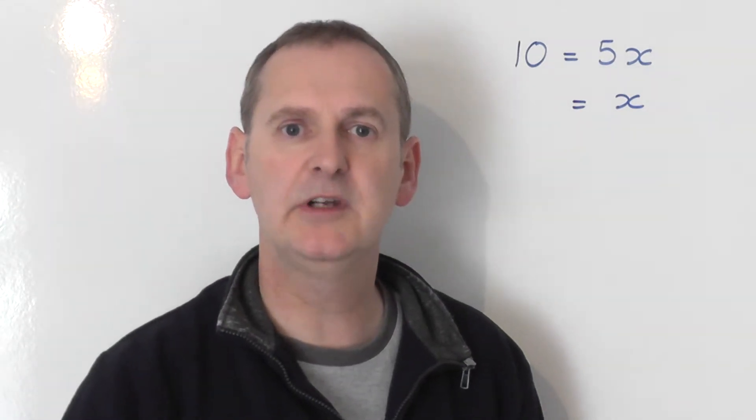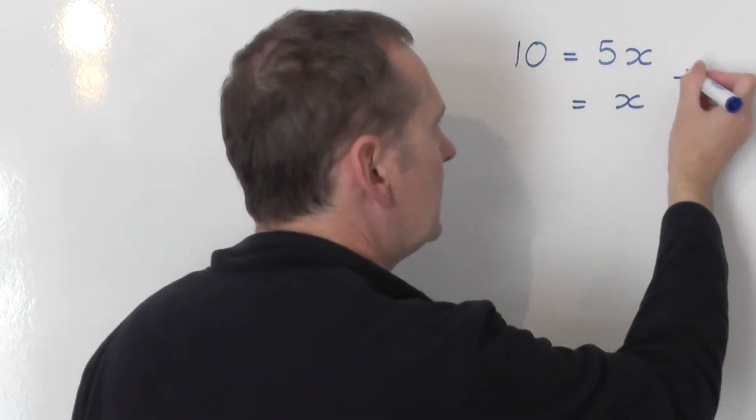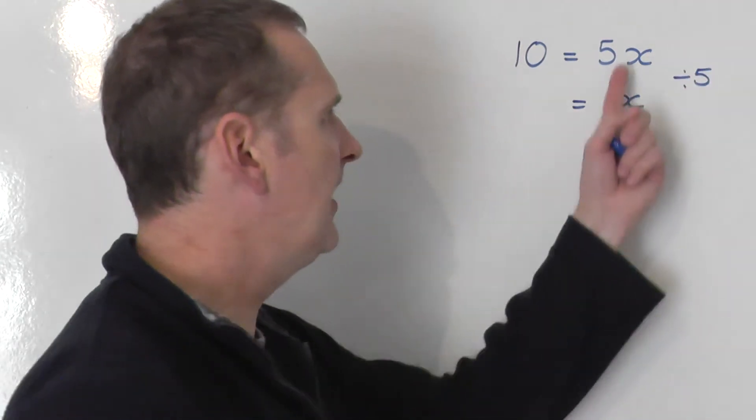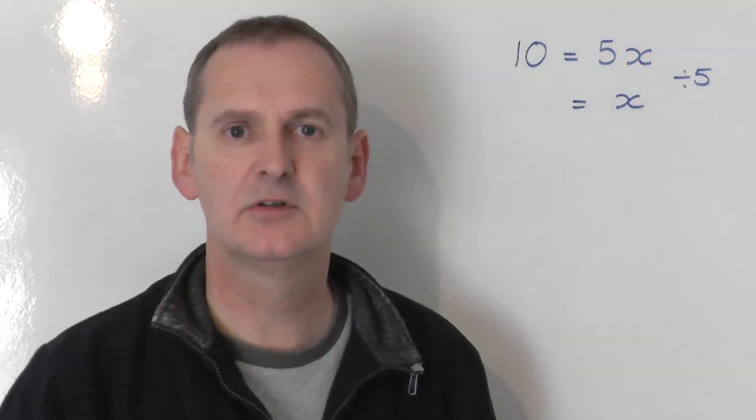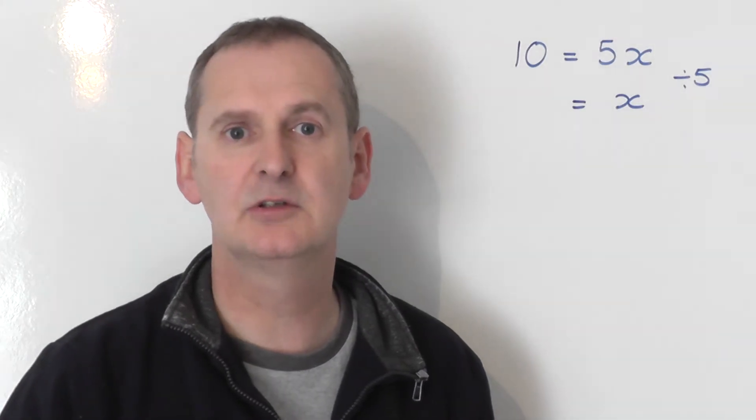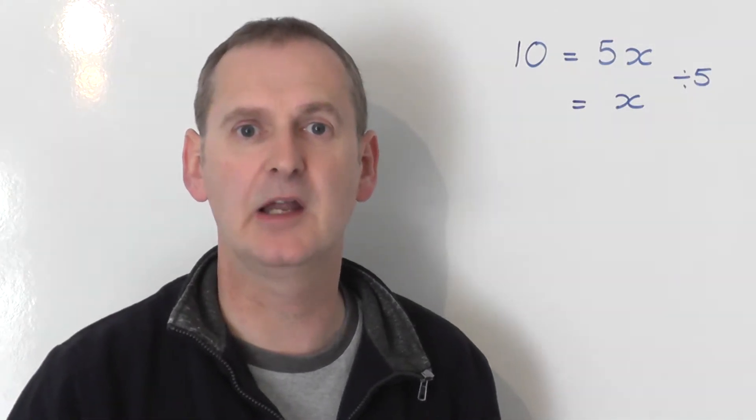Well, we simply divide by 5. If you divide this side by 5, to keep the seesaw balanced, you must share the other side by 5 as well.